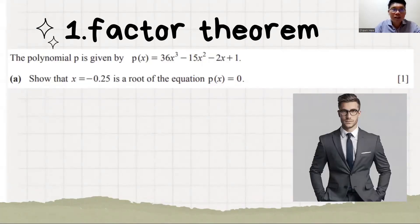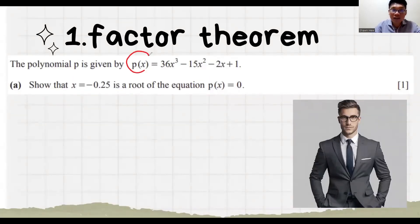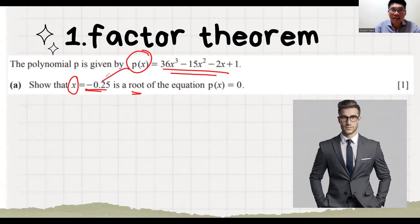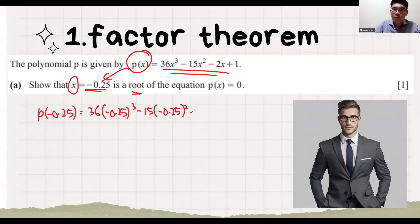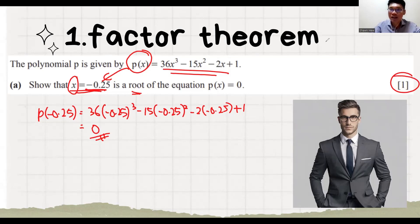Next question. They say the polynomial p is given by this equation. They ask you to show that x equals to 0.25 is a root. So you substitute x as this value, then you key in and see whether it is 0. And you find that it is 0. This is how you show that x equals to negative 0.25 is a root, so you gain 1 mark.